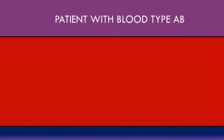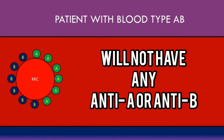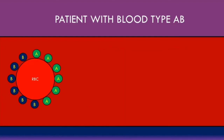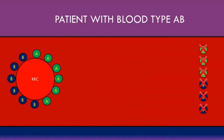For a patient with blood type AB, the red blood cells have a combination of both A and B antigens on their surface. Patients with blood type AB will not have any anti-A or anti-B antibodies in their plasma. When exposed to A and B antigens through the diet, the immune system recognizes both as self-proteins, since the patient has both A and B antigens on their red blood cell surface. Hence, the immune system will not produce any anti-A or anti-B antibodies.